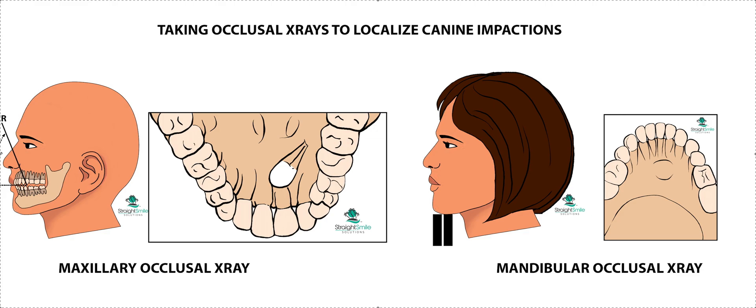I take both maxillary and mandibular ones. You can see here — it's a little cut off — but for the maxillary one, you're going to come down at a 65-degree angle. So you're going to put the nose cone going this way at a 65-degree angle to the occlusal plane, and that's going to give you a view that looks like this if you do have a palatal impacted canine.